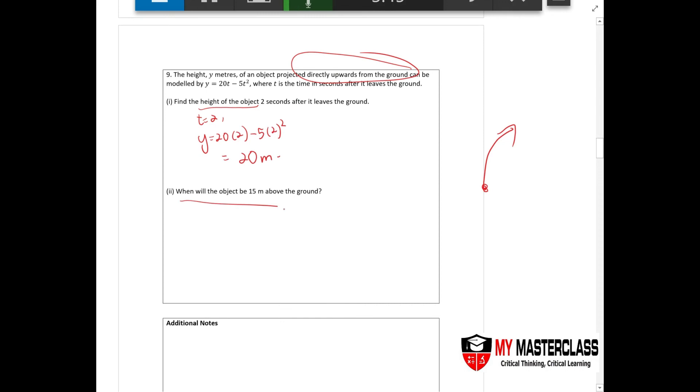Now when will the object be 15 meters? This means height is 15. So when y equals to 15, you will have t minus 5t square. What will you do? You'll combine them together so you have t square minus 4t plus 3 equals to 0.